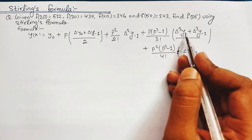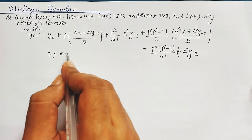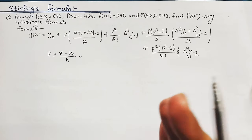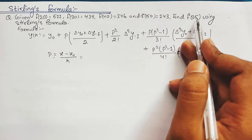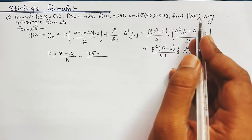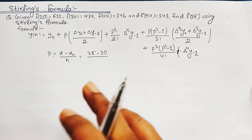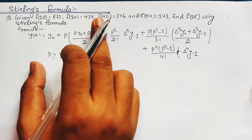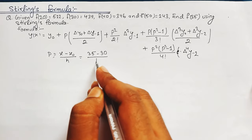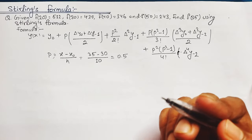Now we need to know what p is. p equals (x − x₀)/h. The value of x we want to find is F(35), so x = 35. Since 35 lies between 30 and 40, we take x₀ = 30. The step size h is the difference between x values — 20, 30, 40, 50 — so h = 10. Solving this: p = (35 − 30)/10 = 0.5.